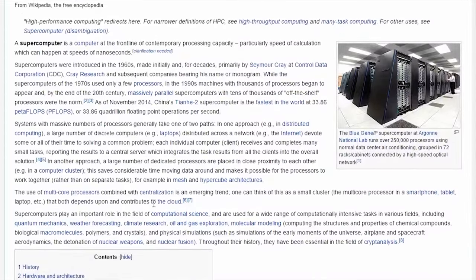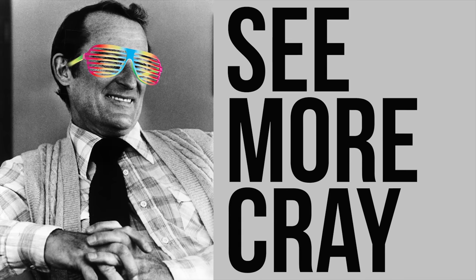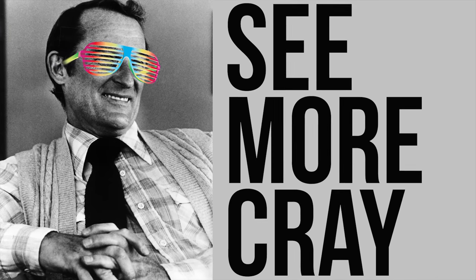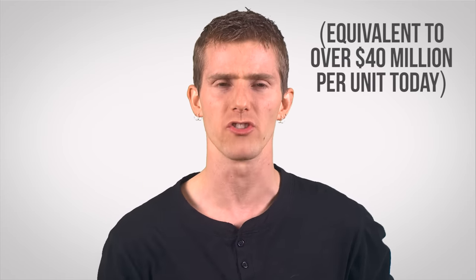It was about ten times faster than all other computers at the time, and CDC, the company for which Cray worked before leaving to start his own, sold a hundred of them at eight million dollars each.